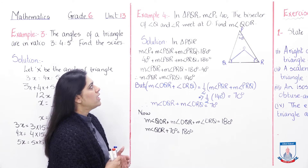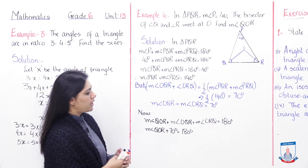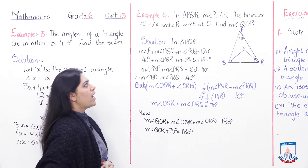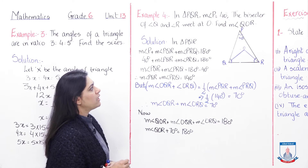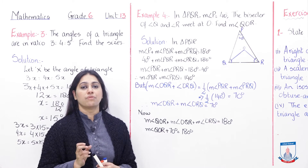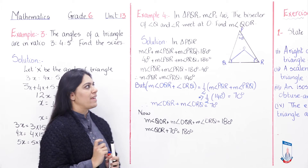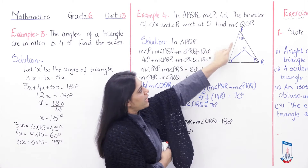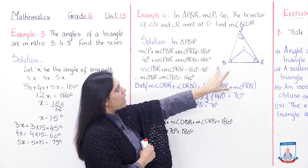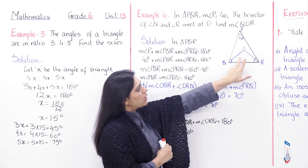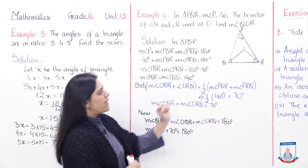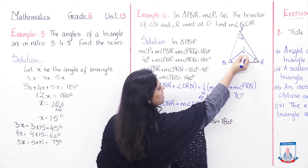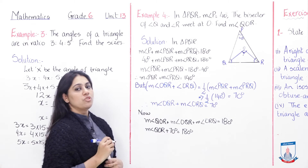In triangle PQR, measure of angle P is equal to 40 degrees. The bisector of angle Q and angle R meets at O. Find measure of angle QOR. First of all, we need to understand the question. We have triangle PQR where angle P = 40 degrees, angle Q and angle R are bisected, and they meet at point O. We need to find angle QOR.